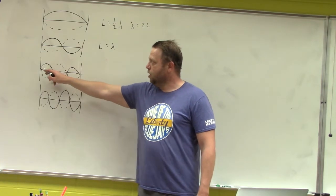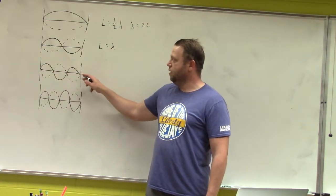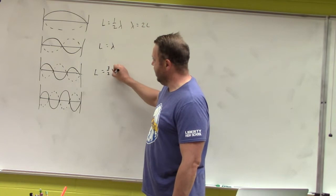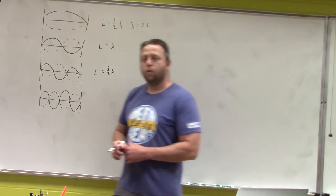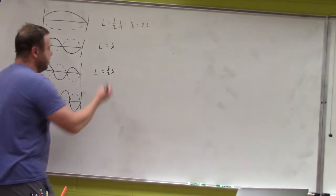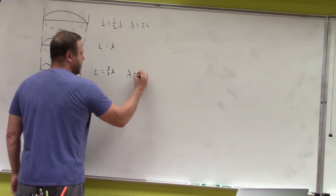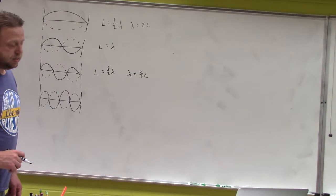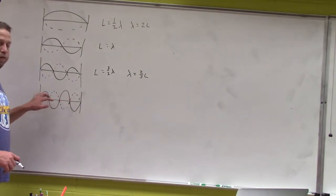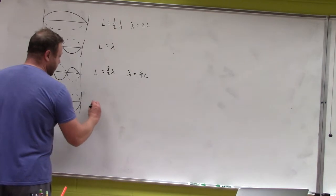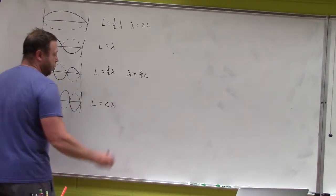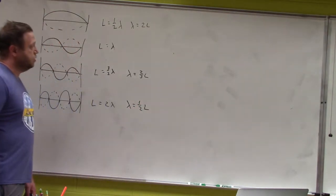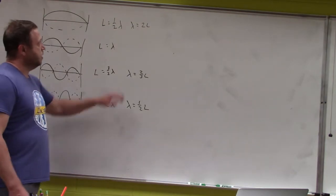For the third waveform, we have half a wave, one full wave, and another half wave, so the length of the string equals three-halves of a wavelength. Rearranging to solve for wavelength gives us lambda equals two-thirds of the length. The last one is easy — we have two complete waveforms, so the length equals two wavelengths, meaning wavelength equals one-half the length of the string.